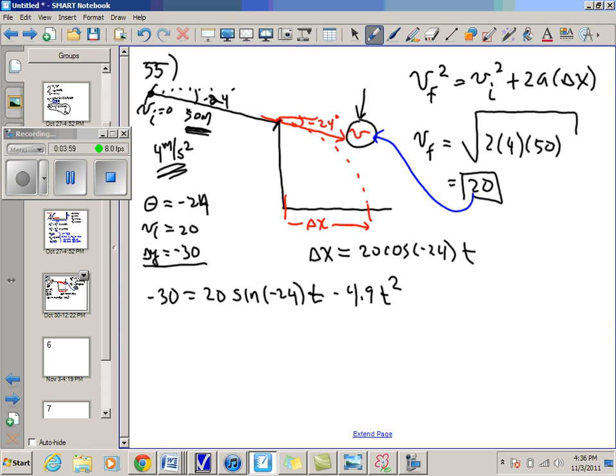This sine of negative 20 sine negative 24 equals about negative 8.1. So I'm going to now say negative 30 equals negative 8.1 t minus 4.9 t squared. And of course, I'm going to have to, this is going to be a quadratic equation that I'm going to have to solve. I'm hoping that you guys are fairly confident in doing that. But let me just move everything over to the left hand side of the equation first. 4.9 t squared plus 8.1 t minus 30 equals 0.